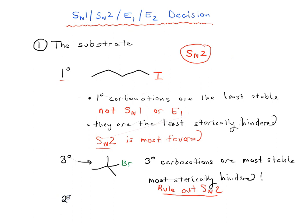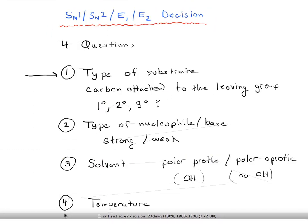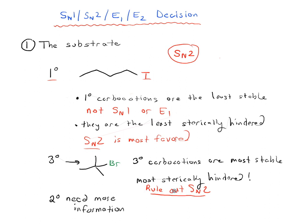If it's secondary, we actually need more information. We don't have enough to decide — we need to ask about the type of nucleophile, type of solvent, temperature, and so forth. Secondary requires more information. Also, we should note the methyl group: if it's a methyl substrate, you can guarantee it's going to be SN2, because there can't be an elimination reaction with methyl.